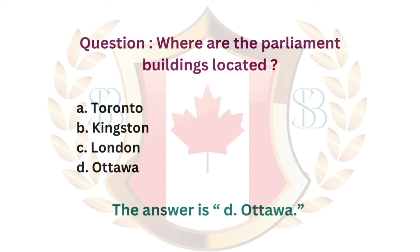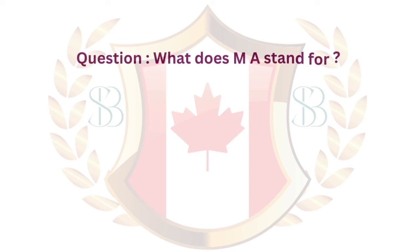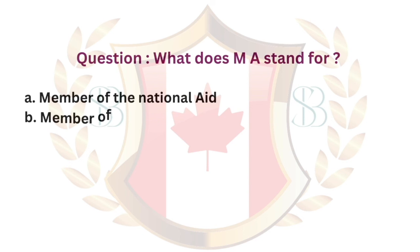Question. Where are the parliament buildings located? a. Toronto. b. Kingston. c. London. d. Ottawa. The answer is d. Ottawa.